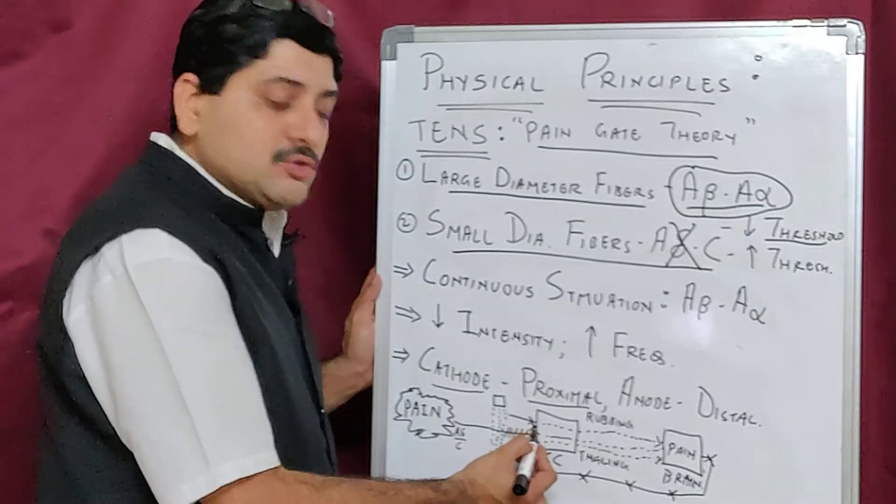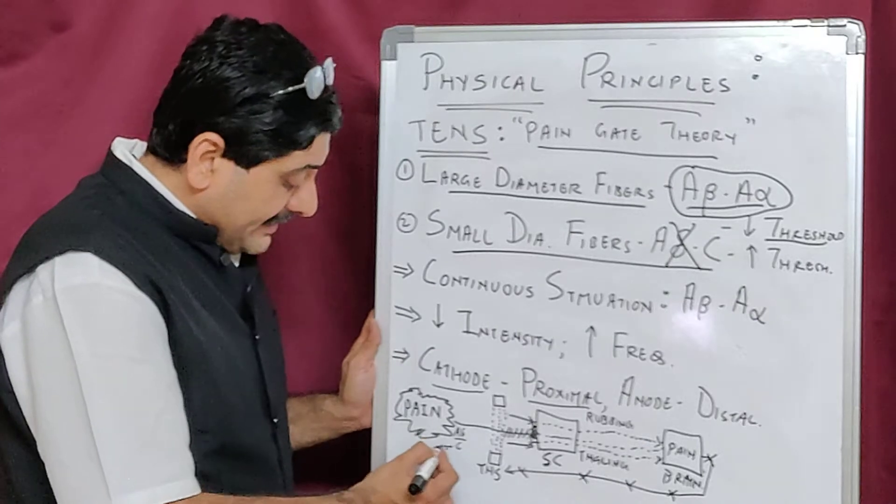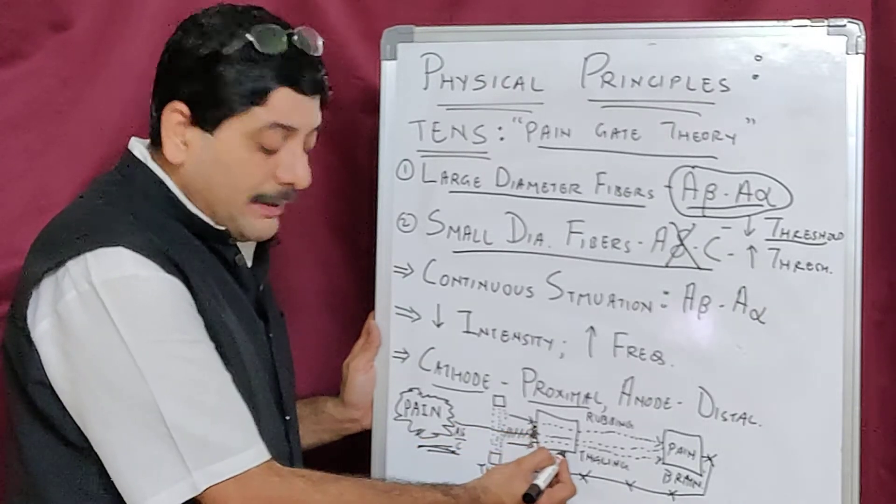The brain is basically identifying the rubbing sensation and not the pain sensation because they are getting inhibited. The door is closed here. Please come to this picture: there is pain carried by A-delta and C fiber to the spinal cord.